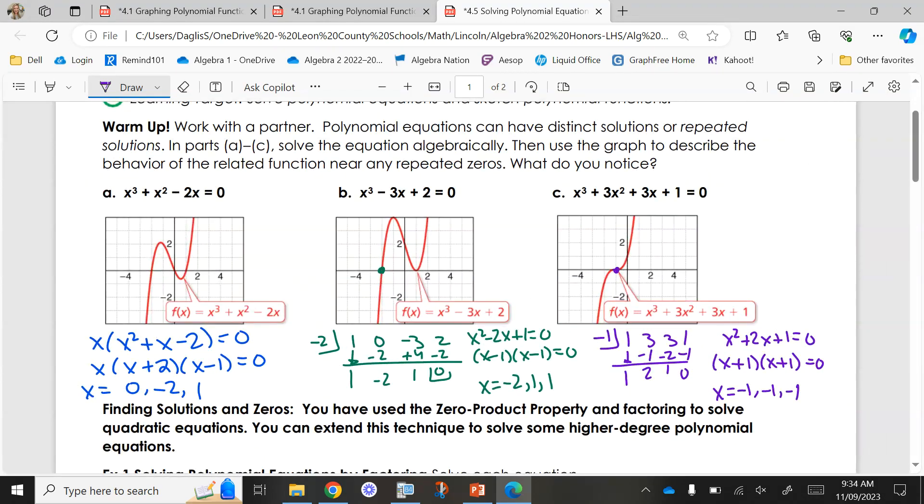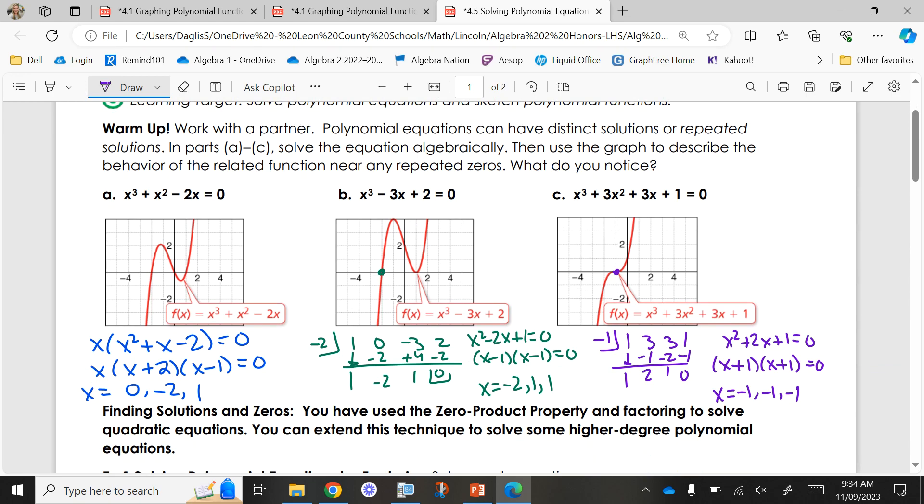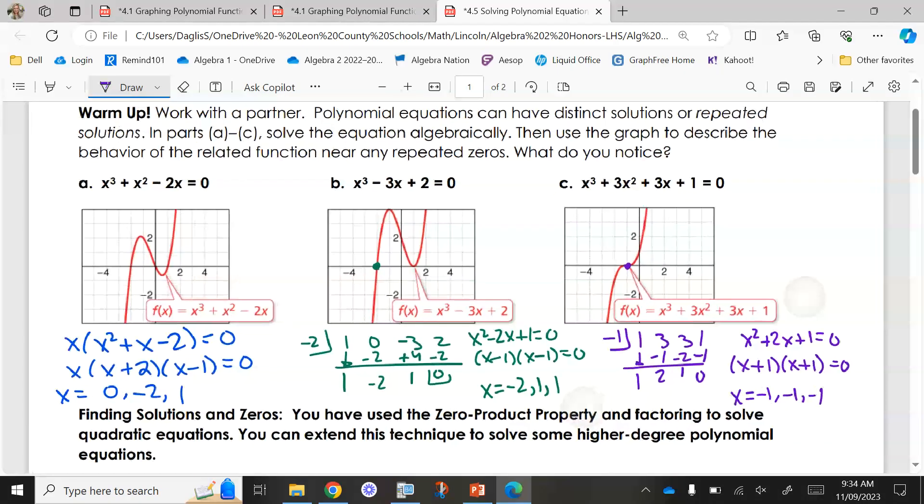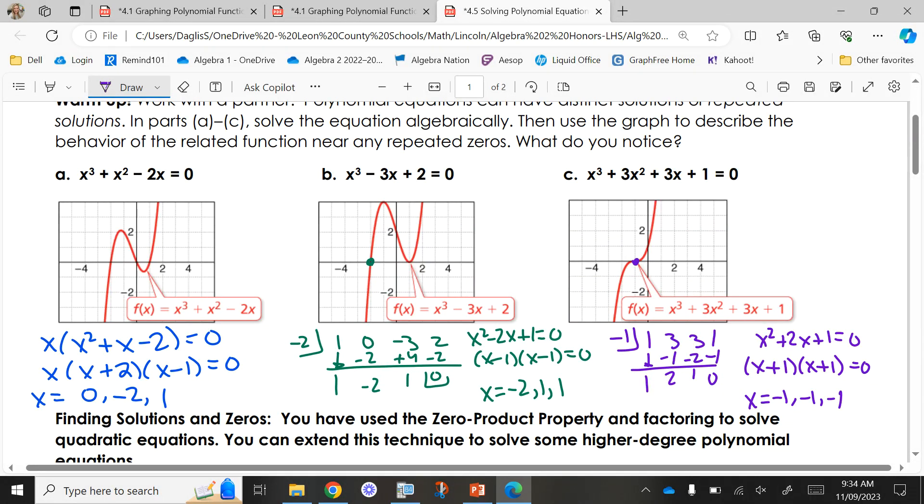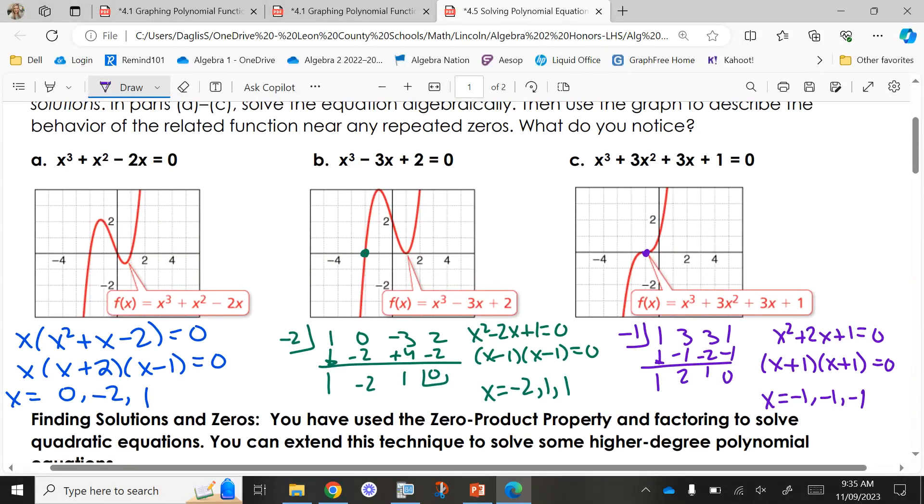Okay, so our warm-up today, you had to solve the equation algebraically and then use the graph to describe the behavior of the related function near any repeated zeros. Solving for our x's ties in our factoring stuff that we did yesterday. We also talked about how when you aren't sure of an x-intercept, you can use one that you see on your graph to prove that it is by synthetic division and then factoring what you have left over.